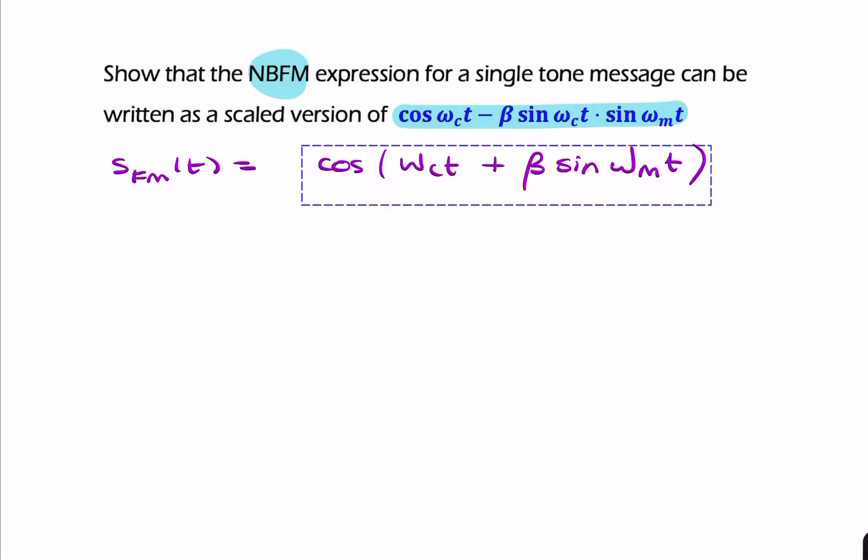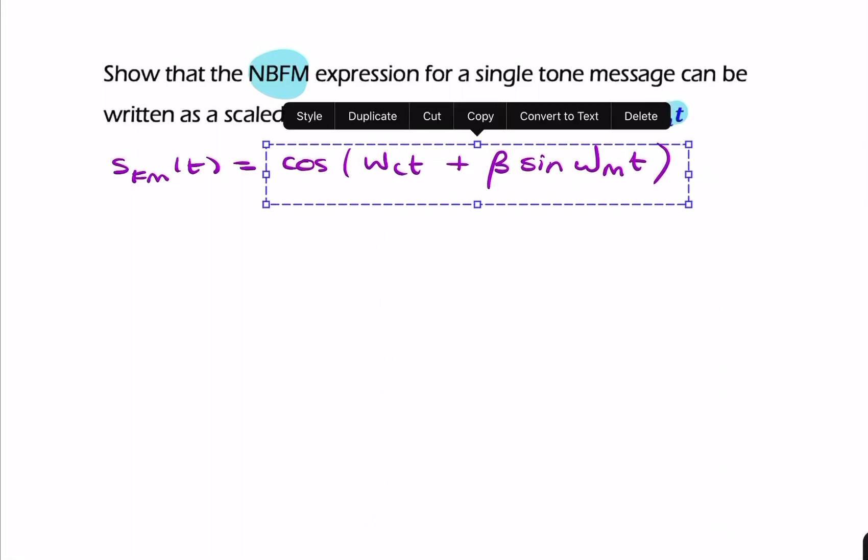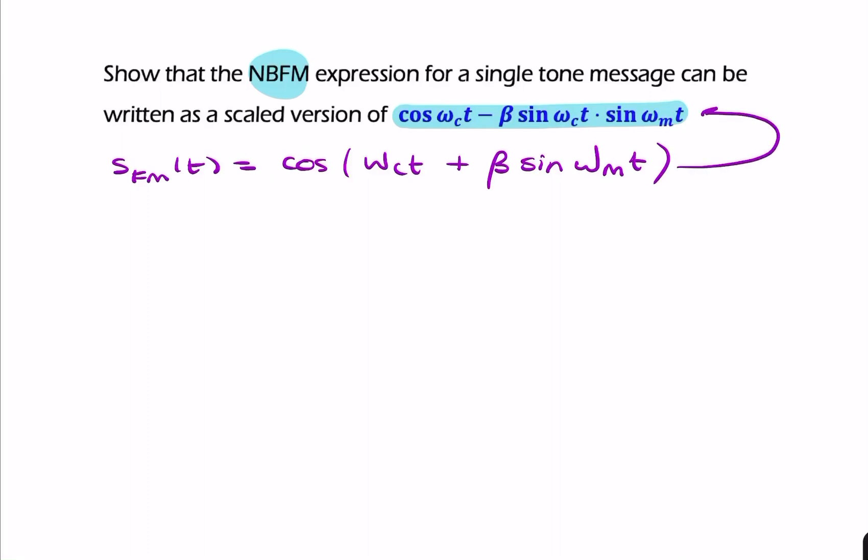Our expression is that and we want to make it look like the target form. Looking at the expression, we have a cosine with two terms inside. These two bits are added together and form the angle or argument for the cosine.